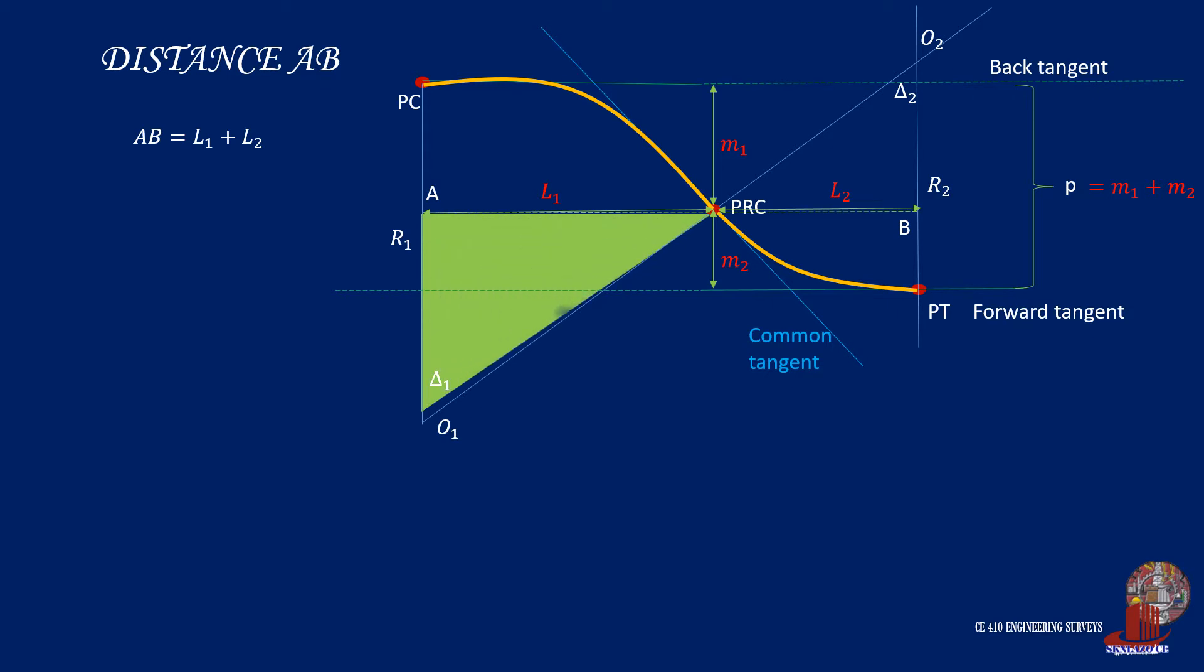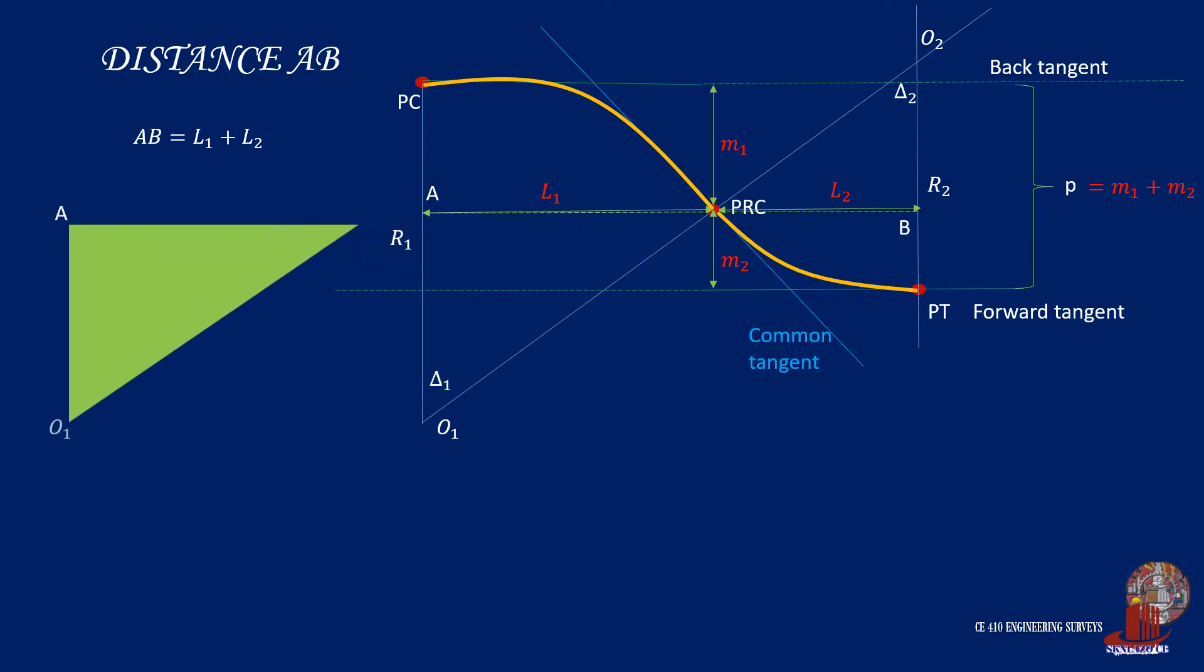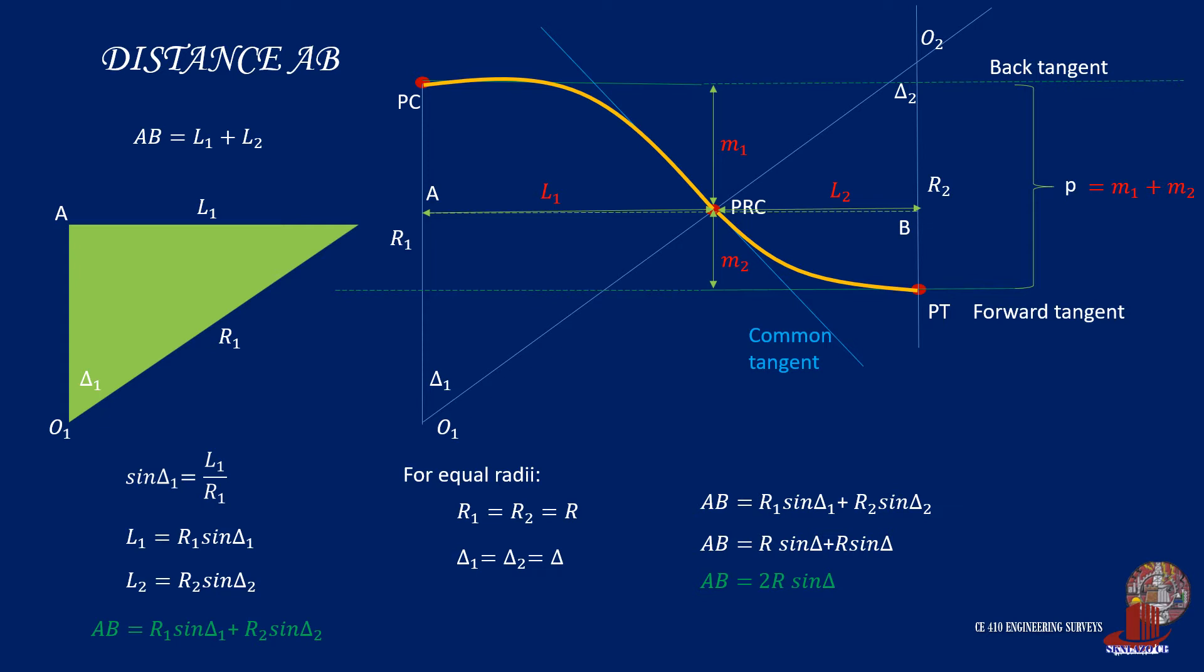Extracting the triangle formed by the curve, we can integrate L1. By using sine of delta 1, which is L1 all over R1, L1 is then computed as R1 times sine of delta 1. L2 will be computed similarly. So AB can be taken as the summation of these two lengths, turning the equation as R1 times sine of delta 1 plus R2 times sine of delta 2. For equal radii, the delta will also be equal to yield parallel tangents, so R1 is R2, which is also just denoted as R. By simplifying these two parameters, distance AB can be taken as 2R sine of delta.